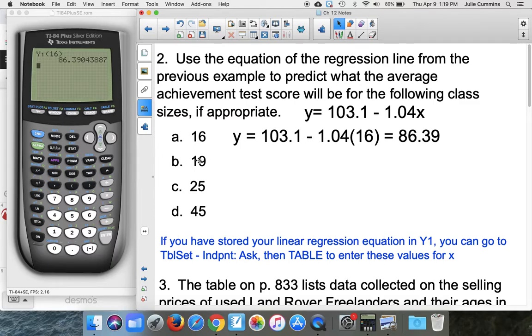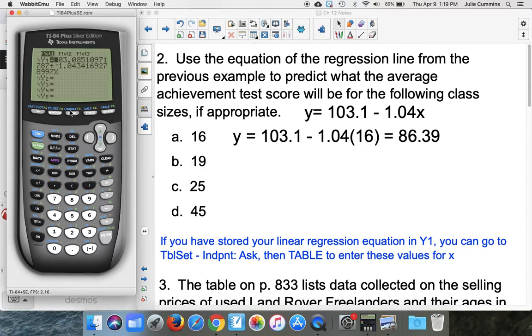So you can do that again if you want to do 19. Another way that you can do this is, remember, since this is stored in Y1, we can use our table function. So if you go to second, table, it creates a table of values. And you can scroll through here until you get to 19.